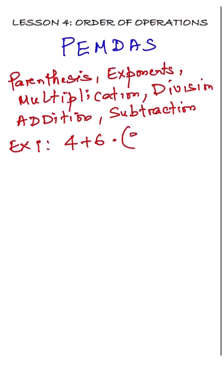Example 1. Take this expression, 4 plus 6 times the quantity 3 plus 2. According to PEMDAS, you start with the parentheses first. Inside the group, 3 plus 2 equals 5.